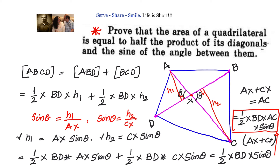H1 and H2 are the altitudes drawn from opposite vertices A and C respectively to the base BD. H1 is the altitude for the first triangle and H2 is the altitude for the second. Using trigonometry, sin theta equals H1 over AX and sin theta equals H2 over CX. So we replace H1 with AX·sin theta and H2 with CX·sin theta. Substituting into the formula gives half into BD into AC into sin theta — that is, half into the product of the diagonals and the sine of the angle between them.